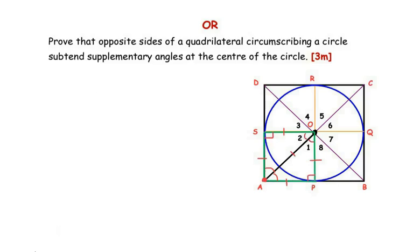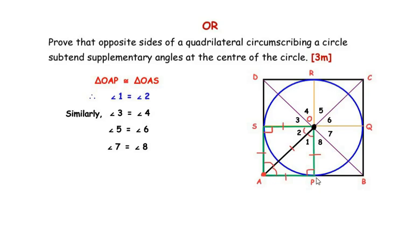Marking all angles at the center as angle 1 through angle 8, from triangles OAP and OAS we get angle 1 equals angle 2. Similarly, considering quadrilateral ORDS, using the same reasoning, angle 3 equals angle 4. From another quadrilateral, angle 5 equals angle 6, and finally angle 7 equals angle 8.